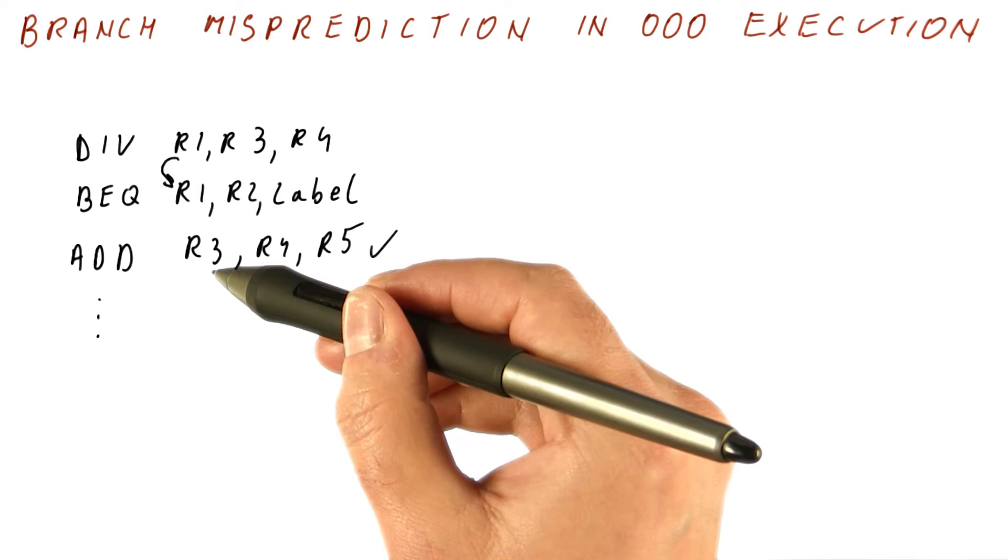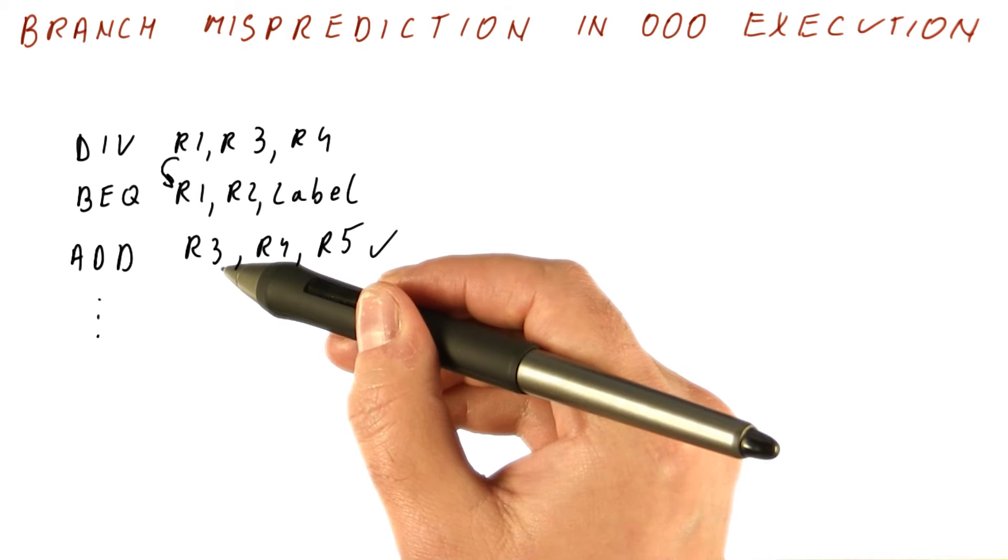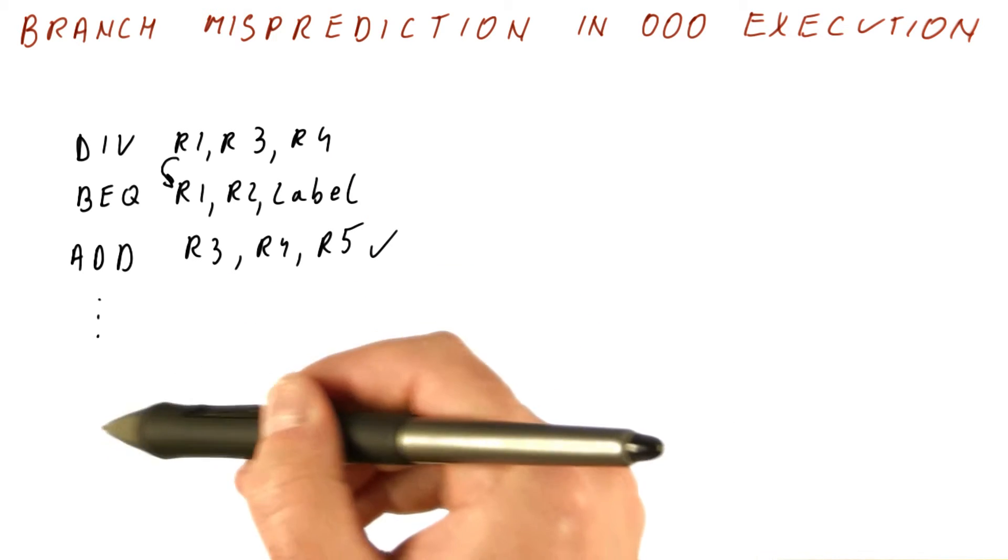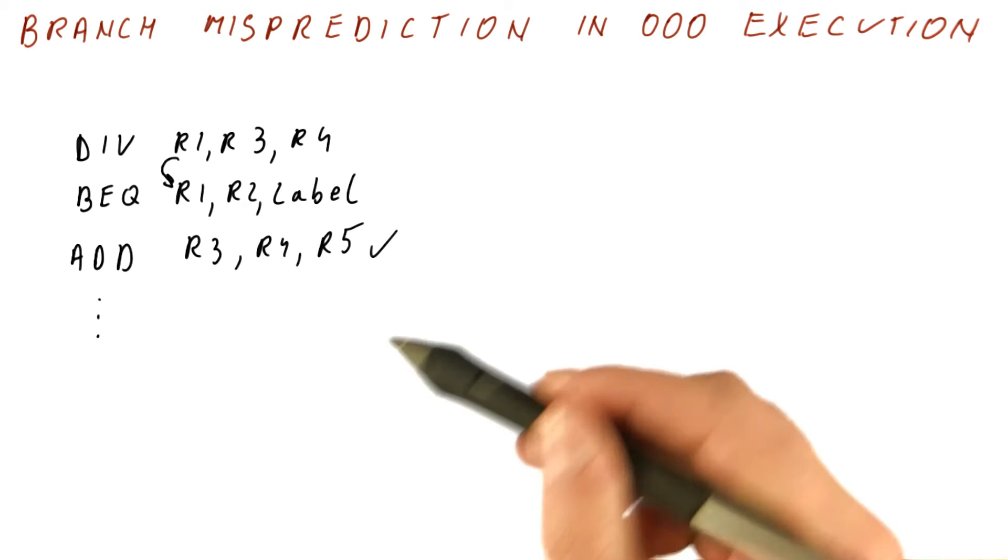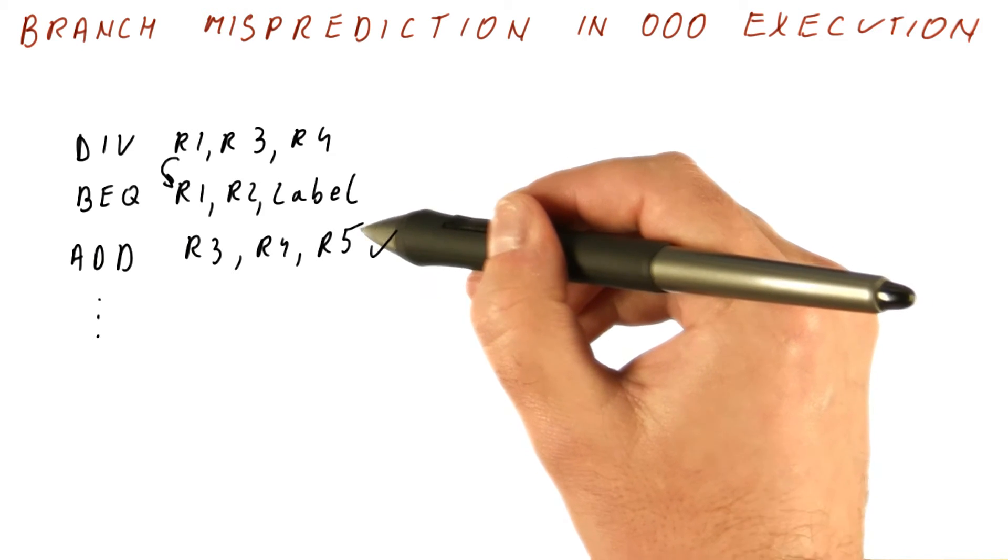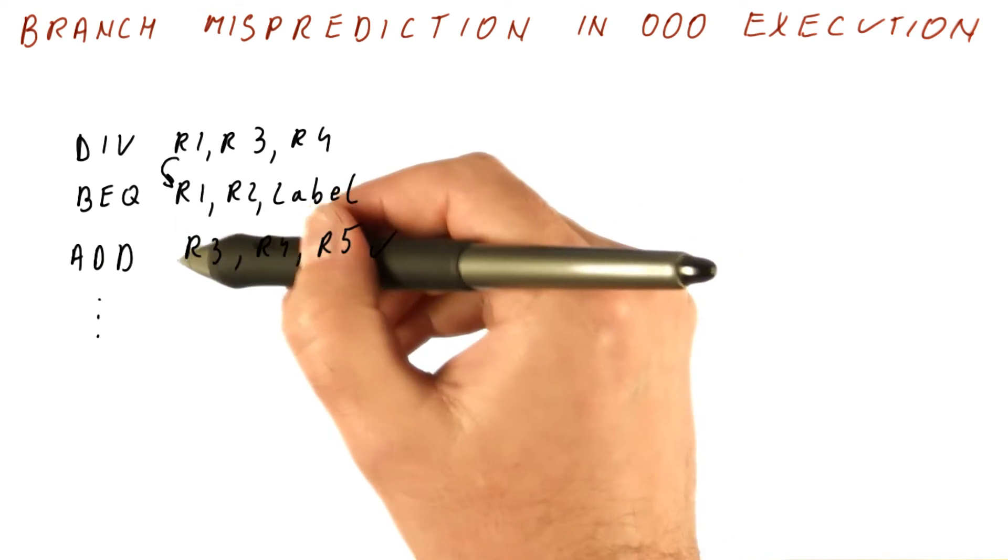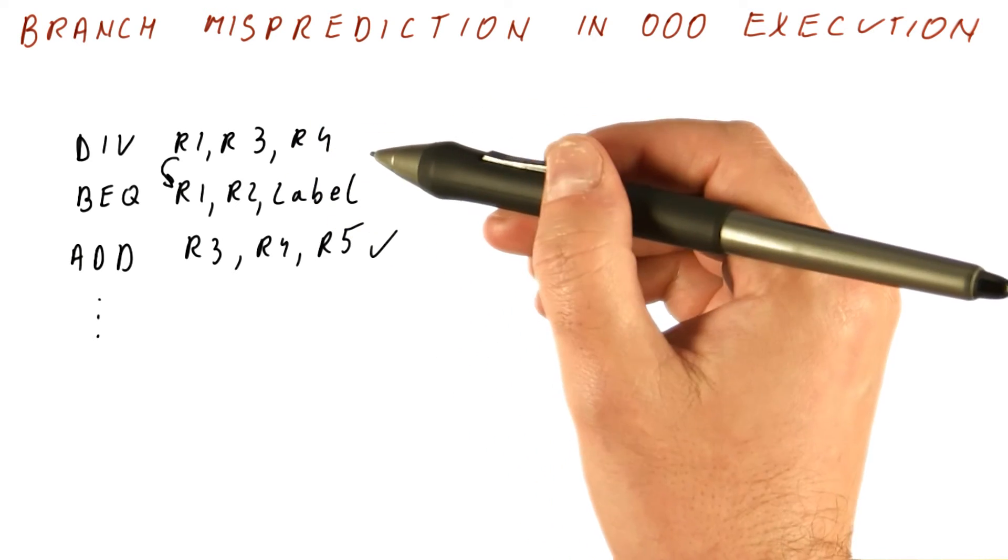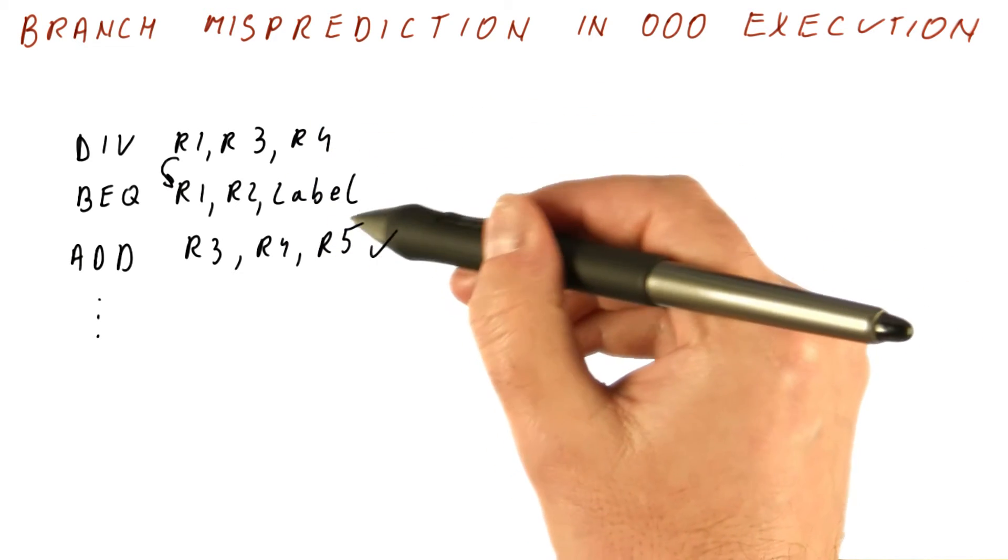But that becomes impossible because R3 by that time has already been updated. So instead of having the old value of R3, now we have the new value of R3 when we jump to the label. The problem is very similar to precise exceptions, in that an instruction can complete and write to registers before preceding instructions have fully been verified and before we even know that this instruction should have been executed.